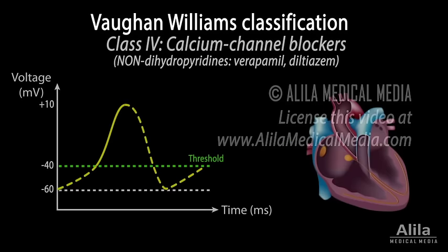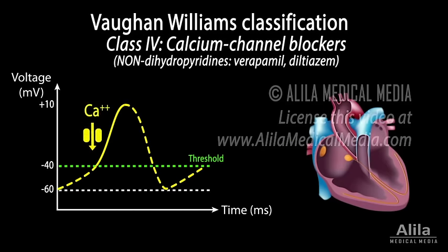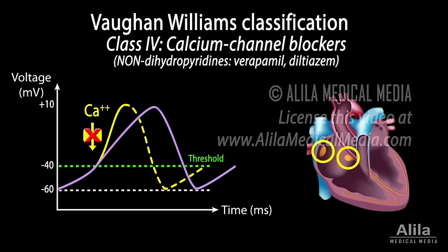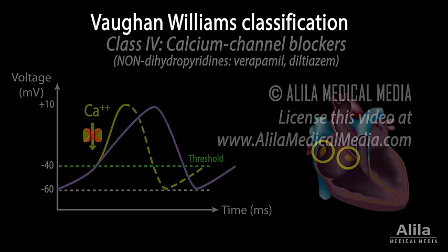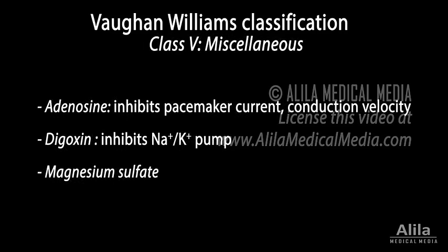Class 4: calcium channel blockers. These drugs block calcium channels that are responsible for depolarization in SA and AV nodal cells. Blocking these channels results in a lower sinus rate and slower conduction through the AV node. However, because calcium is also involved in cardiac myocyte contraction, these agents also reduce contractility of the heart and should not be used in cases of systolic heart failure. Class 5 includes all drugs that act by other or unknown mechanisms.